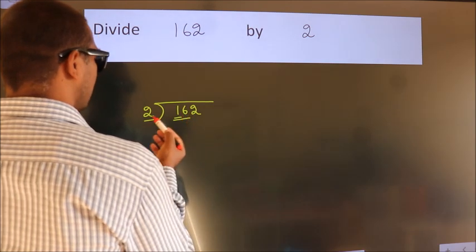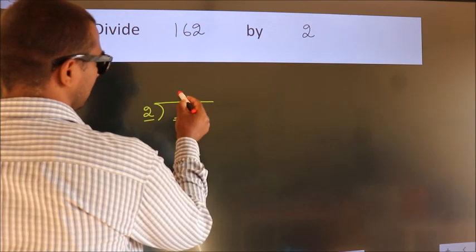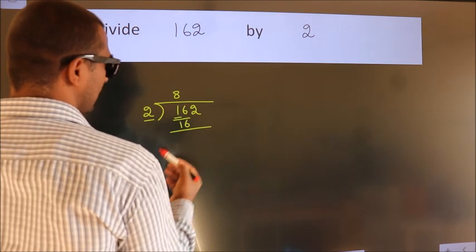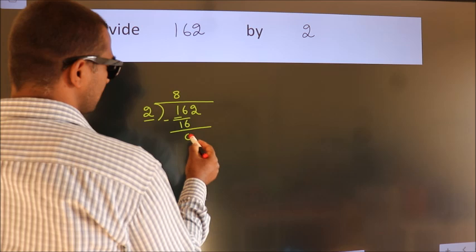When do we get 16? In 2 table, 2 times 8, 16. Now we should subtract. We get 0.